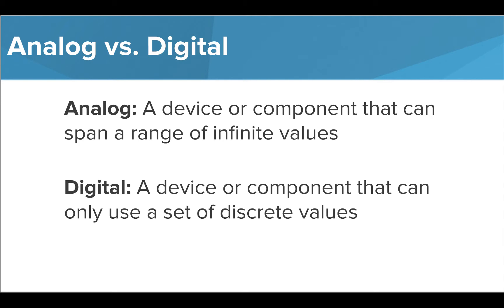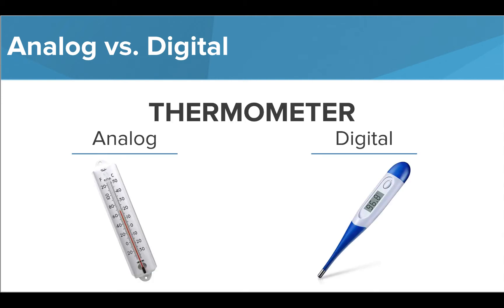Let's look at some examples. A thermometer is a great example of something that can be analog or digital. An analog thermometer could conceivably show an infinite number of values using the red indicator.